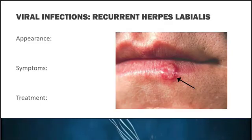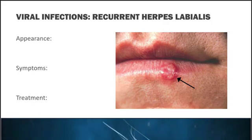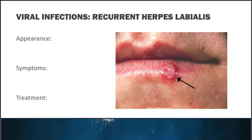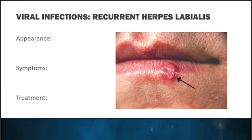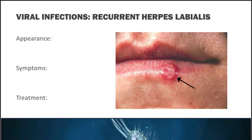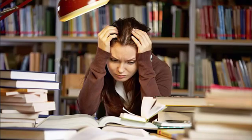Recurrent herpes labialis has a characteristic appearance of a cluster of vesicles formed into one lesion, typically seen on the lower vermilion border of the lip. When a patient contracts herpes simplex virus, it enters a latent state living in the nerve tissue of the trigeminal ganglion, and when triggered the lesion reappears. These are often called cold sores or fever blisters because they tend to break out during times of illness, but other triggers include sunlight, menstruation, fatigue, and emotional stress.